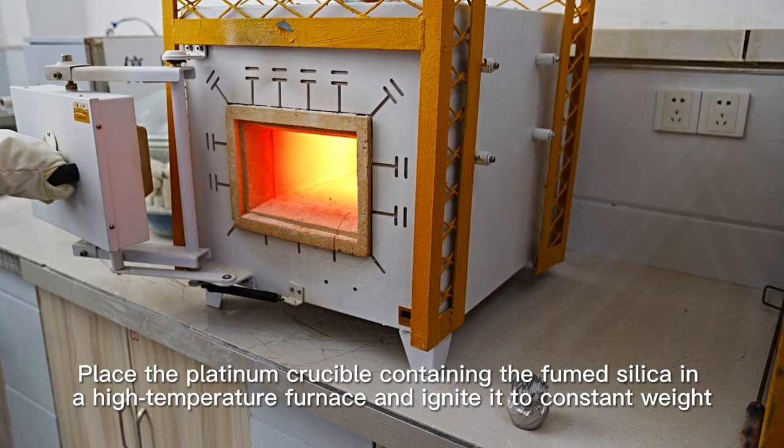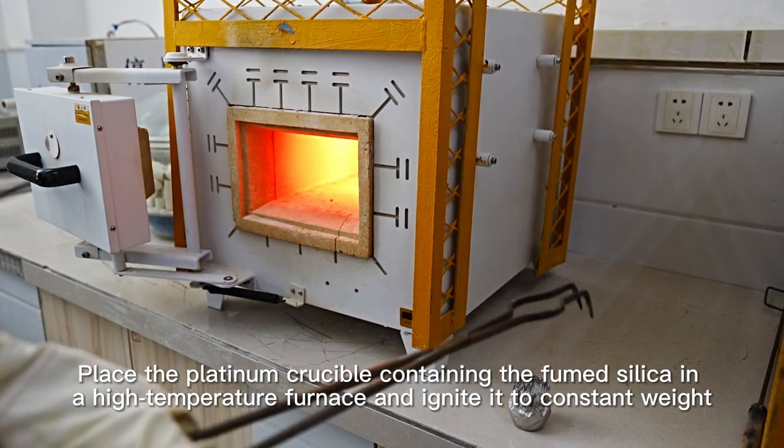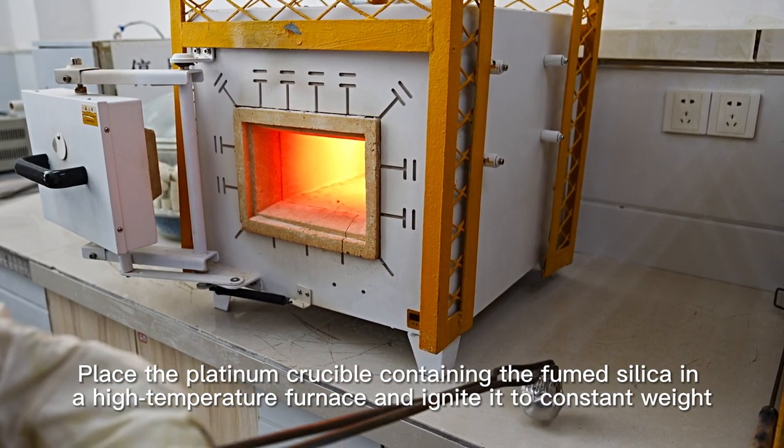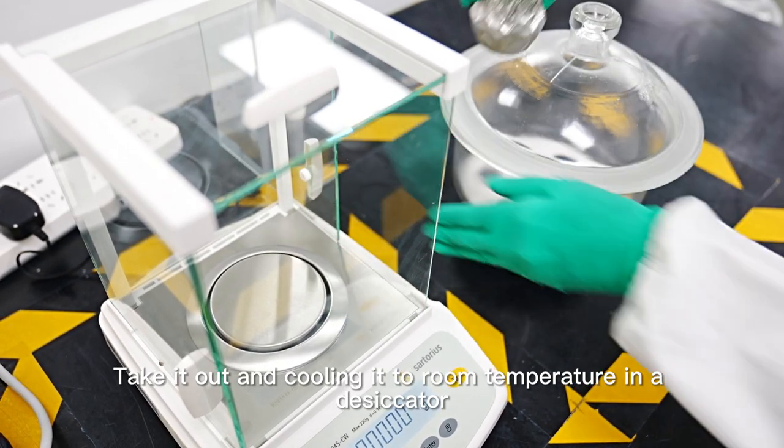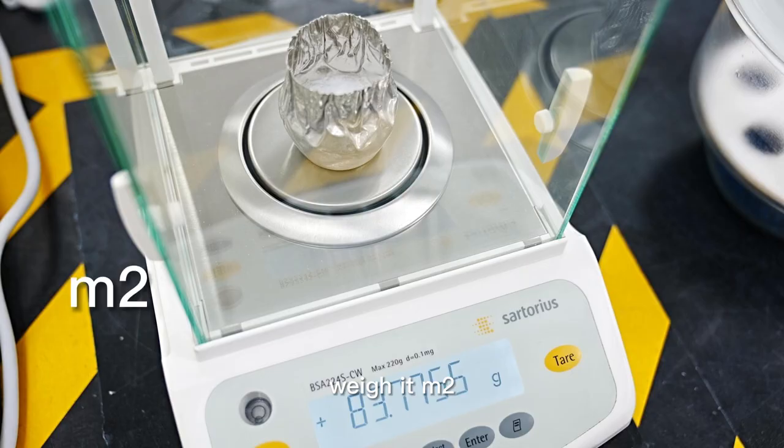Place the platinum crucible containing the fumed silica in a high-temperature furnace and ignite it to constant weight. Take it out and cool it to room temperature in a desiccator. Weigh it M2.